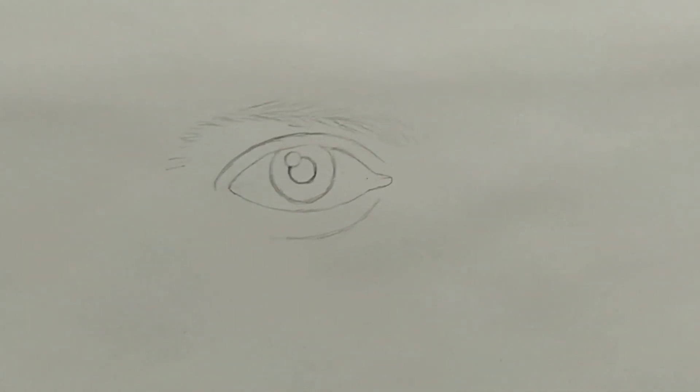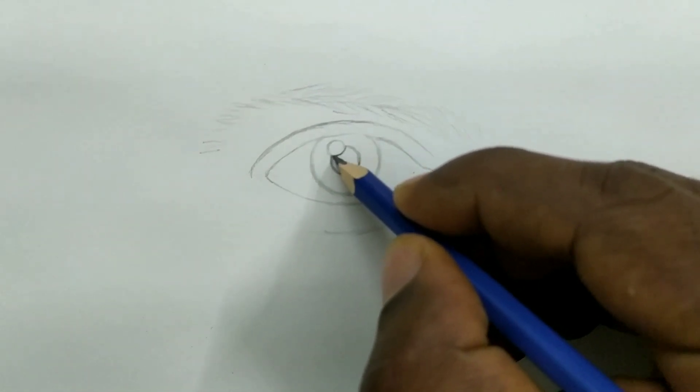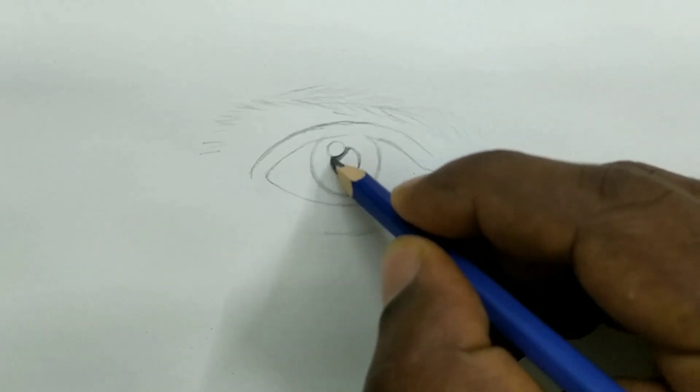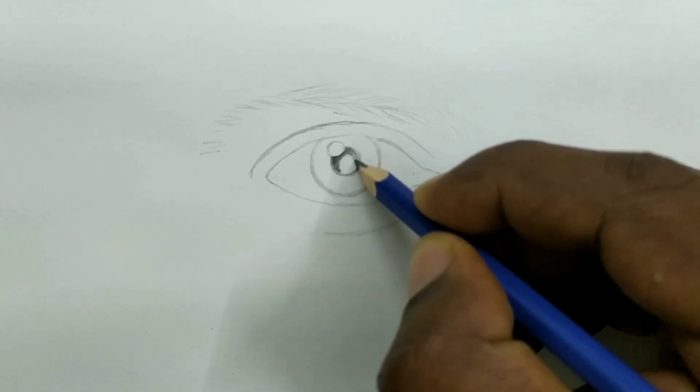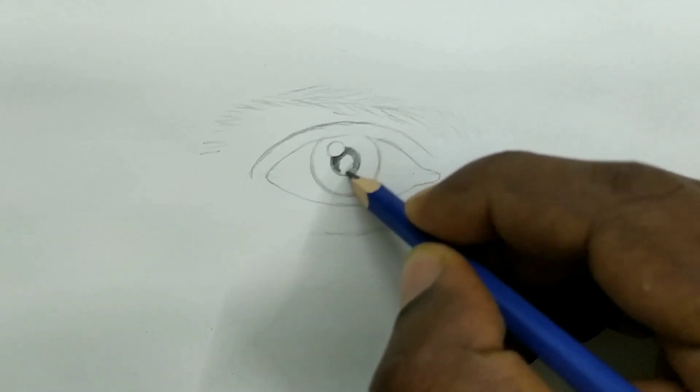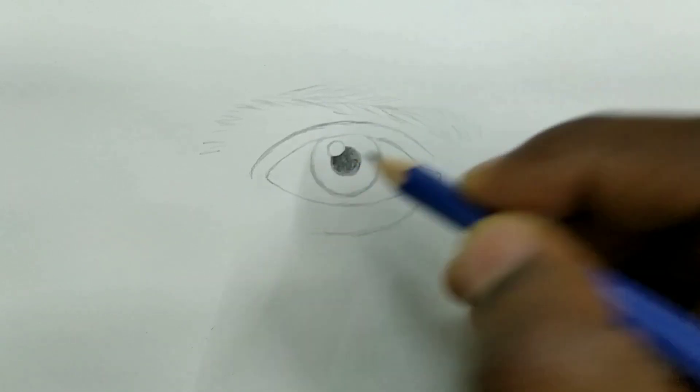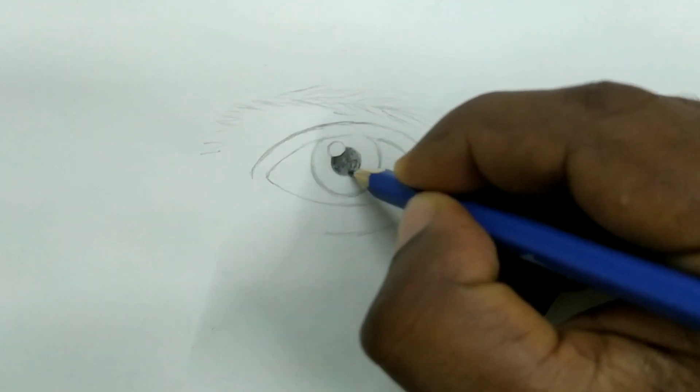Now our sketching is over, now we will give little bit shades. The shades makes the two dimensional drawing to the three dimensional drawing. First of all I am making pupil area darker because it is the deepest area, light is not going to reflect. So we are making that area dark, make sure that the first circle which we made very firstly to be left as it is.